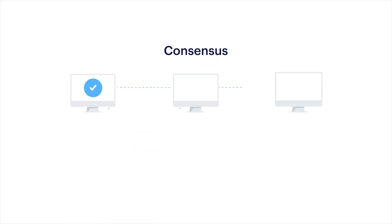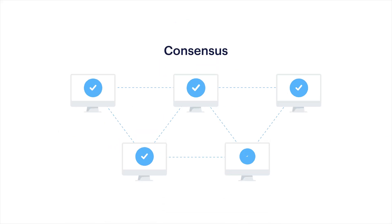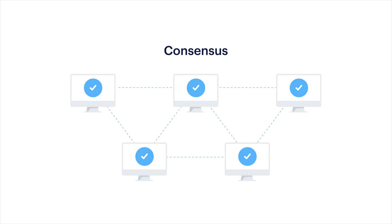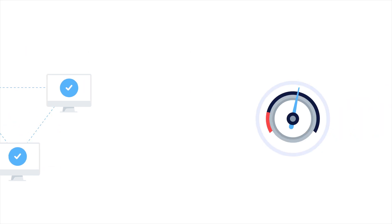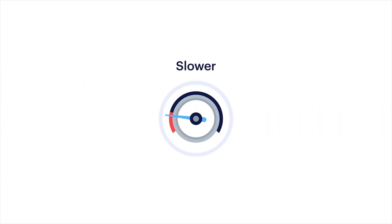This makes it impossible for the network to function because no one agrees about who owns what. So consensus is very important. It allows all the computers in the network to be in complete agreement without the need for a central decision-maker. Achieving consensus, however, comes at a cost. It can make blockchain slow because decisions must be made collectively.